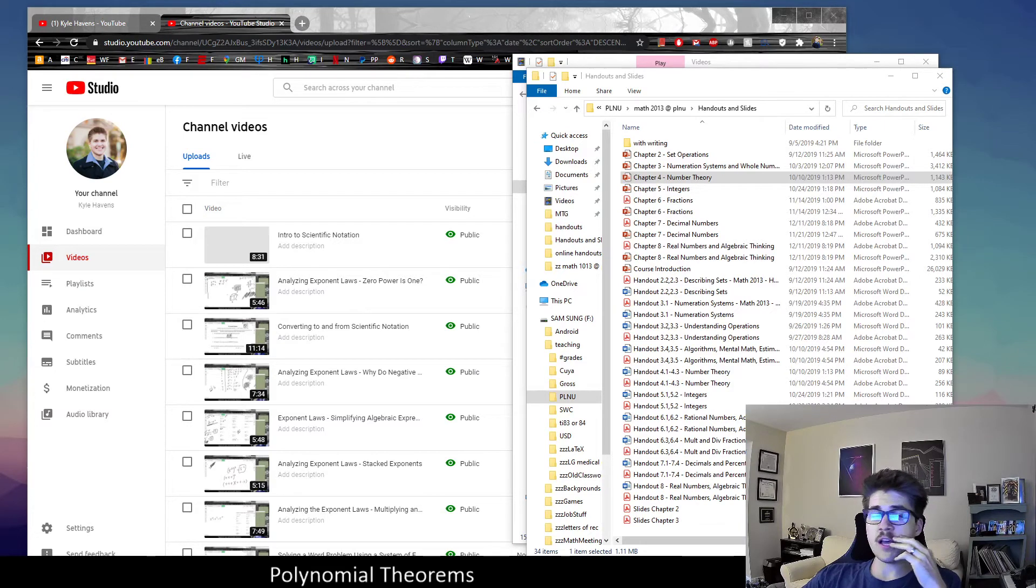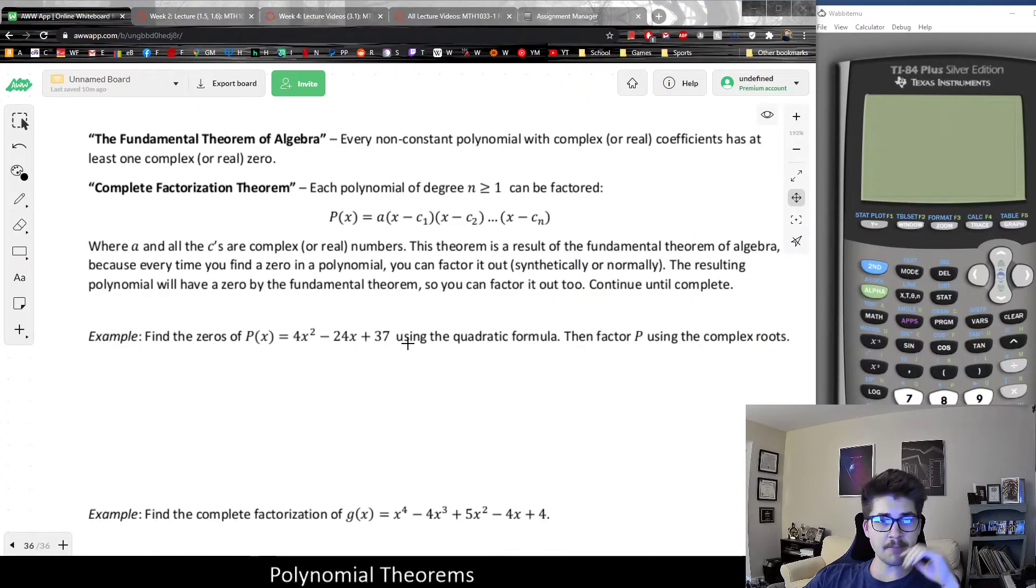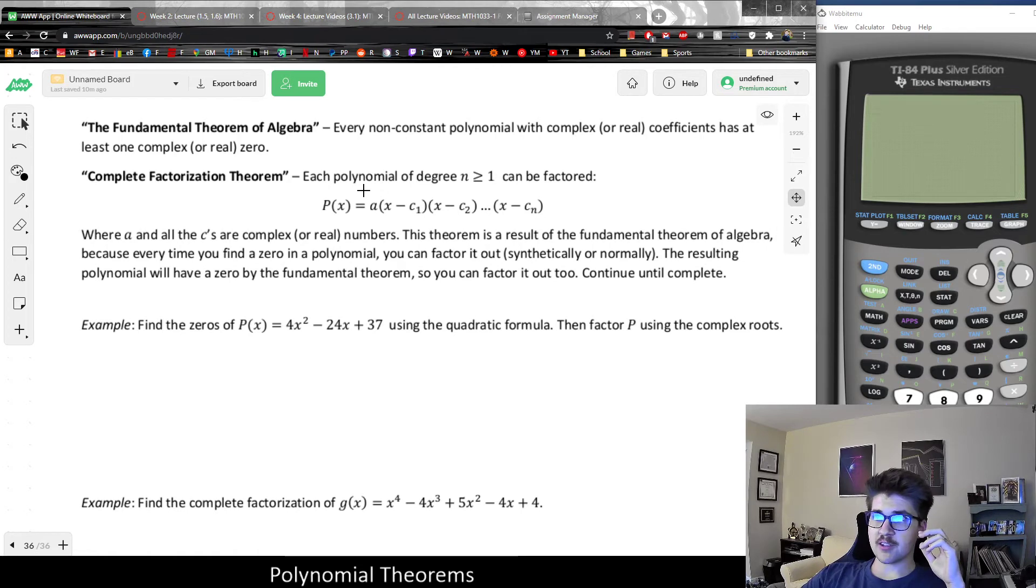And the complete factorization theorem is a direct result of the fundamental theorem of algebra. And what it says is that each polynomial with degree n greater than or equal to one can be factored in such a way. P of x is equal to a times (x minus c1) times (x minus c2) dot dot dot up to (x minus cn), where a and all the c's are complex or real numbers. And essentially, reading between the lines here, what it's saying is that every single polynomial can be fully factored into the form a times (x minus c), where c1, c2, up to cn are all the roots of those polynomial functions.